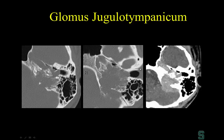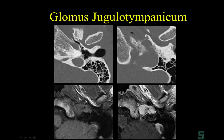MRI adds value by ruling out the 'tip of the iceberg' phenomenon — occasionally a red retrotympanic mass represents a glomus jugulotympanicum, with significant tumor extending into the jugular foramen. Trying to simply pick off what looks like a small tympanicum would be problematic if the tumor is actually growing deeply and eroding the skull base. So always check for deep extension.